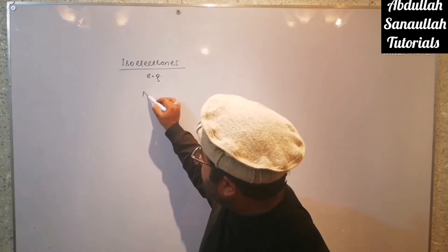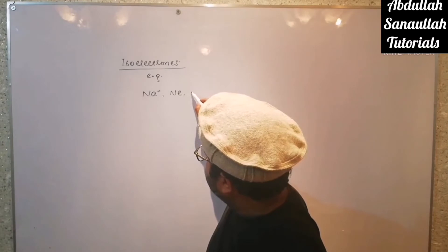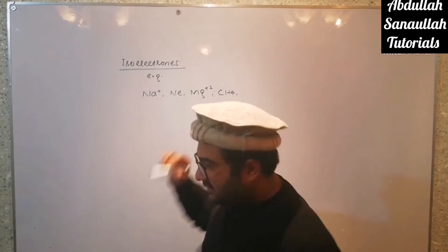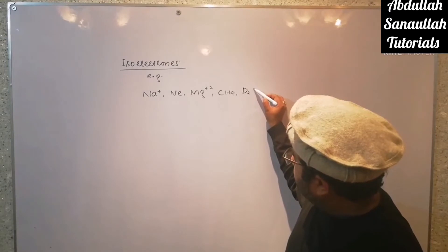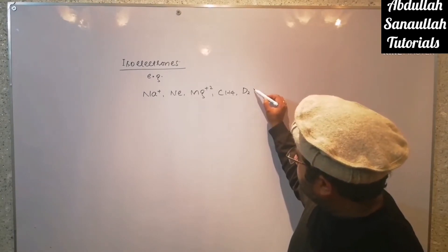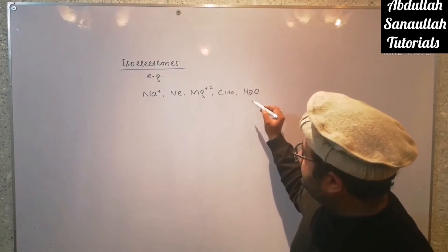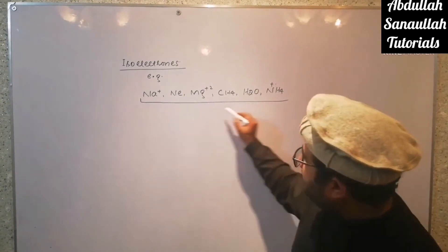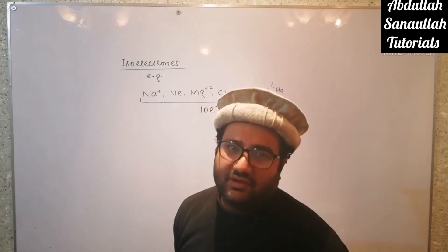For example, sodium positive, neon, magnesium plus 2, CS4, H2O, NH4 positive. These are all having 10 electrons, so these are called as the isoelectrons.